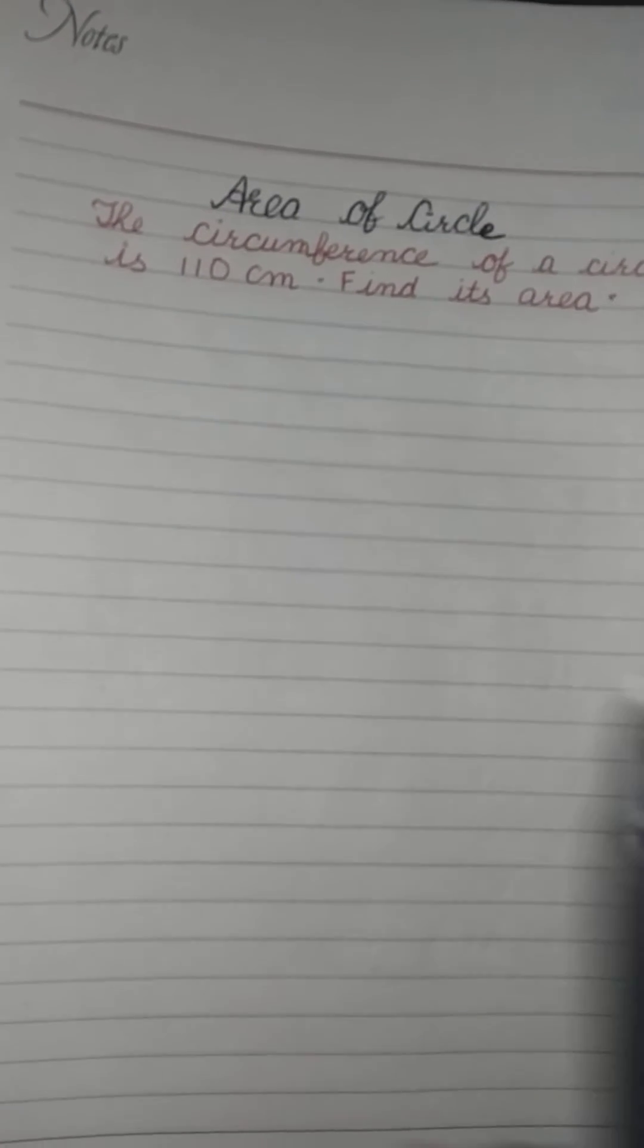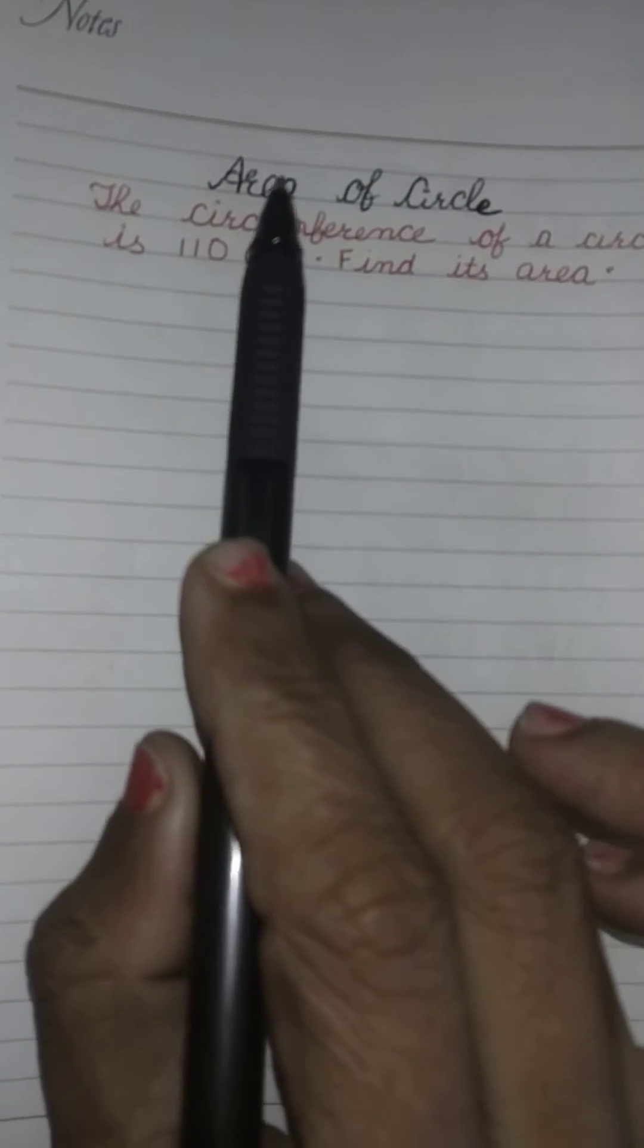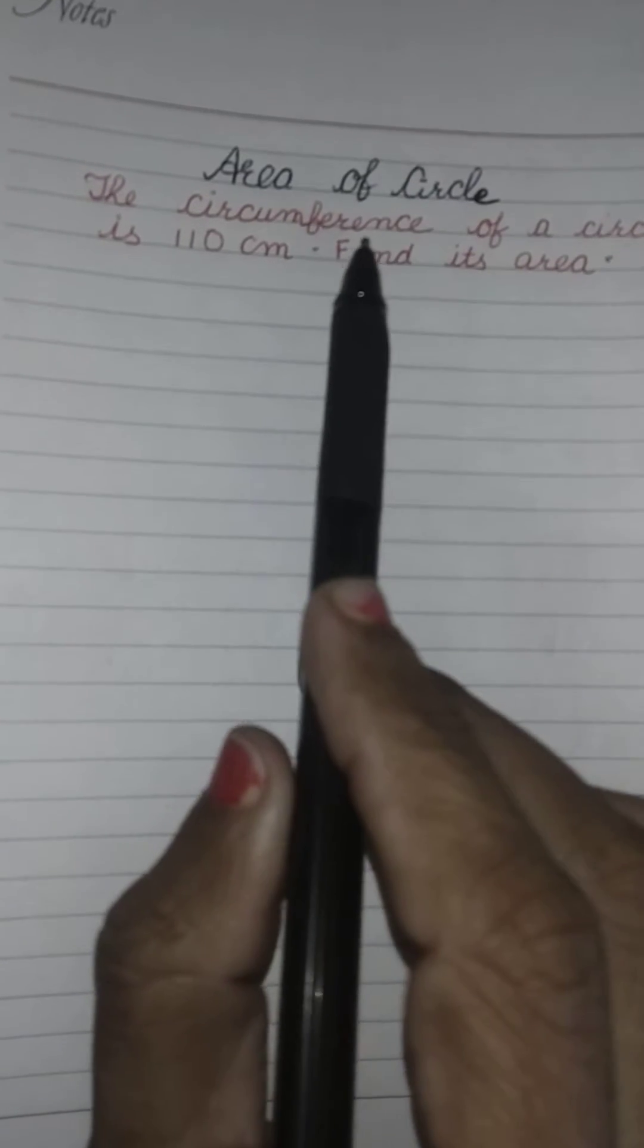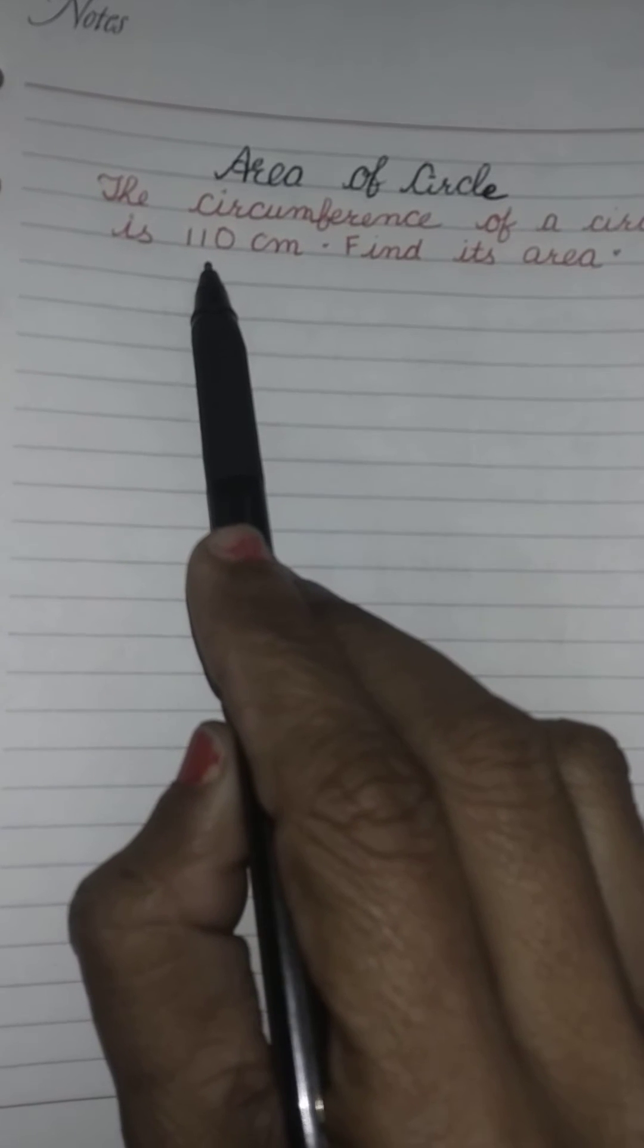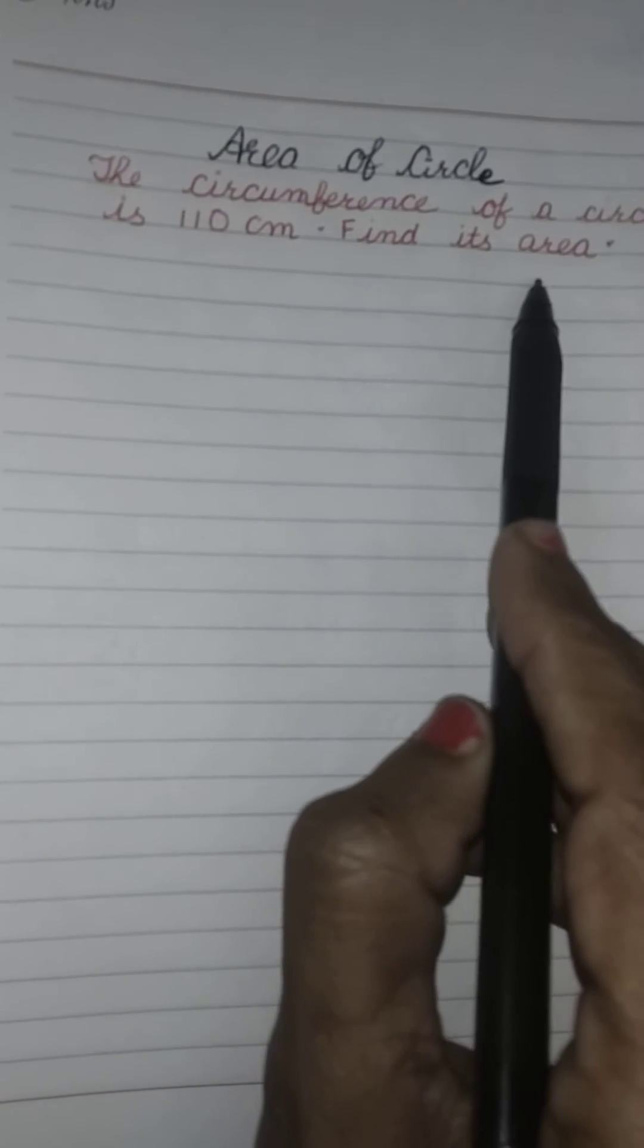Hello dear friends, welcome back with another video on the topic area of circle. The question is: the circumference of a circle is 110 cm. Find its area.